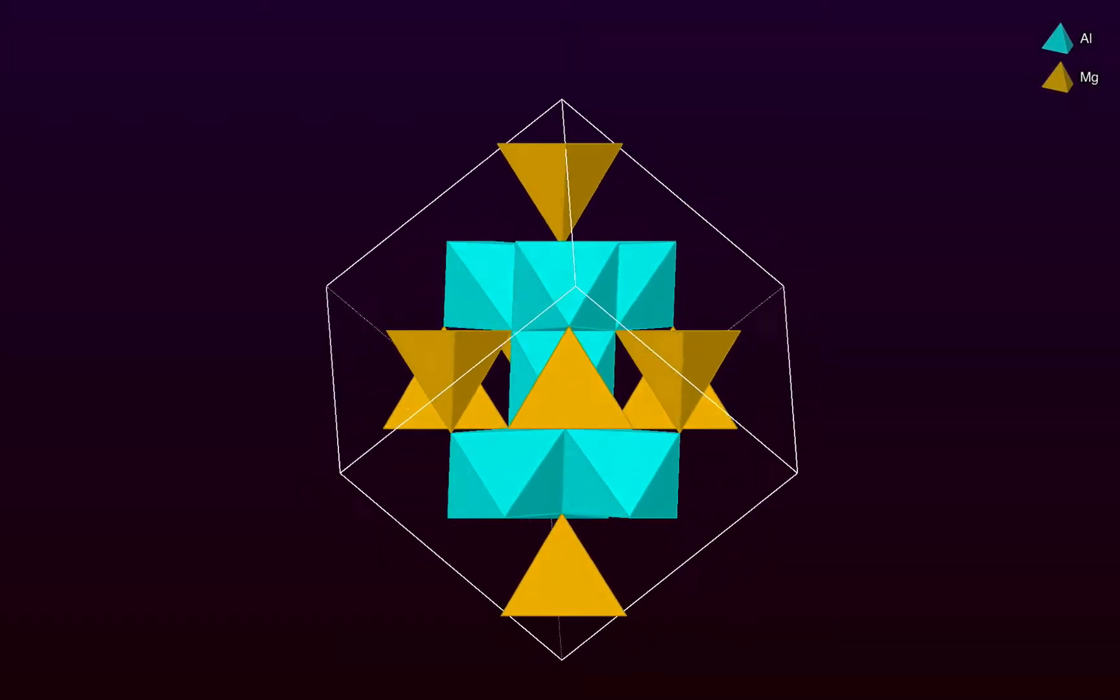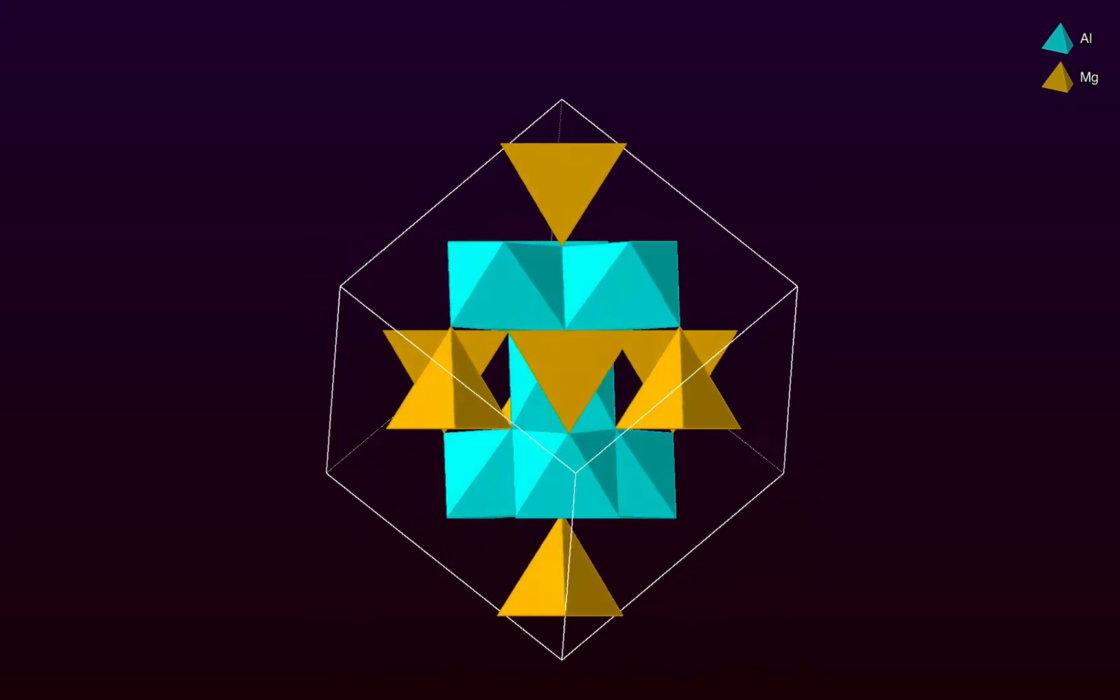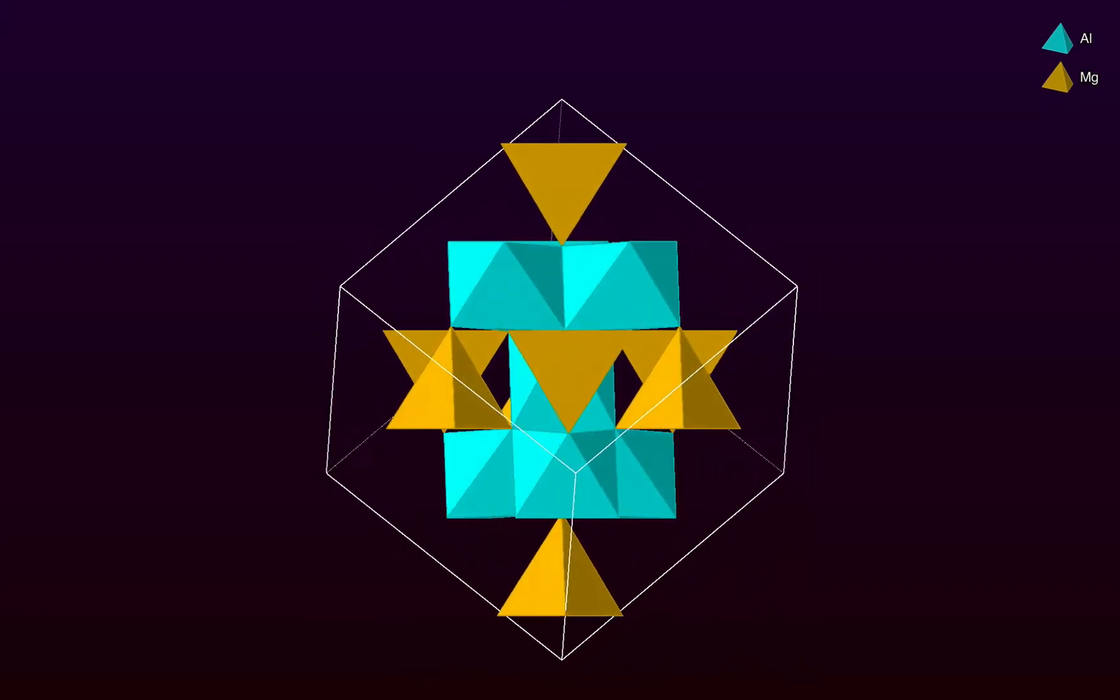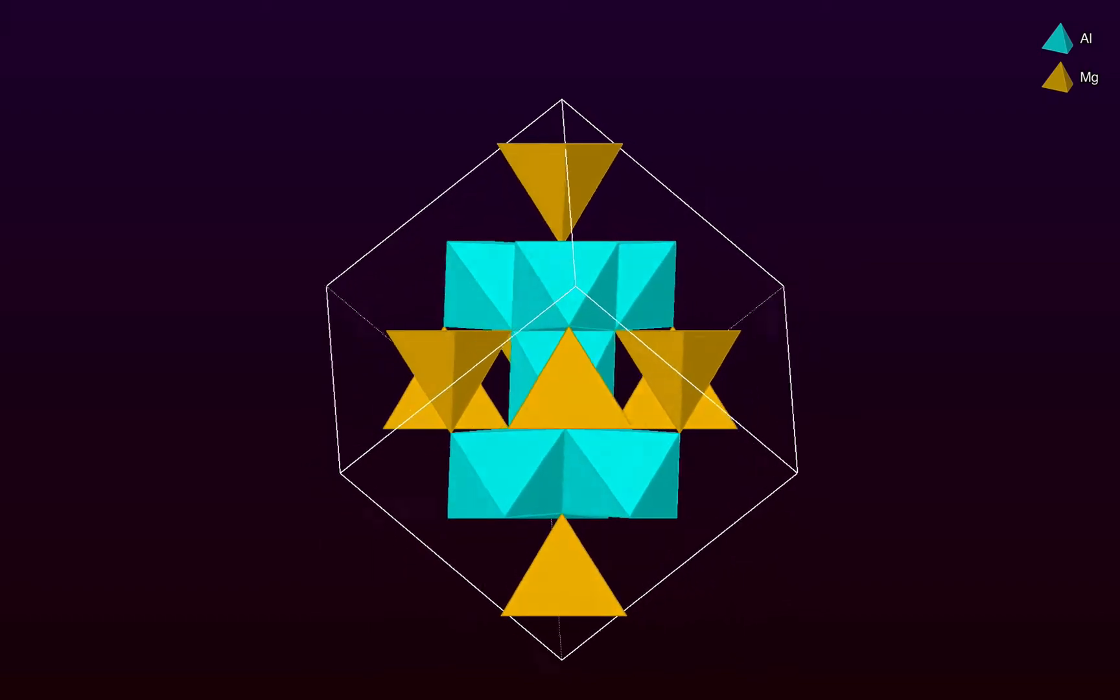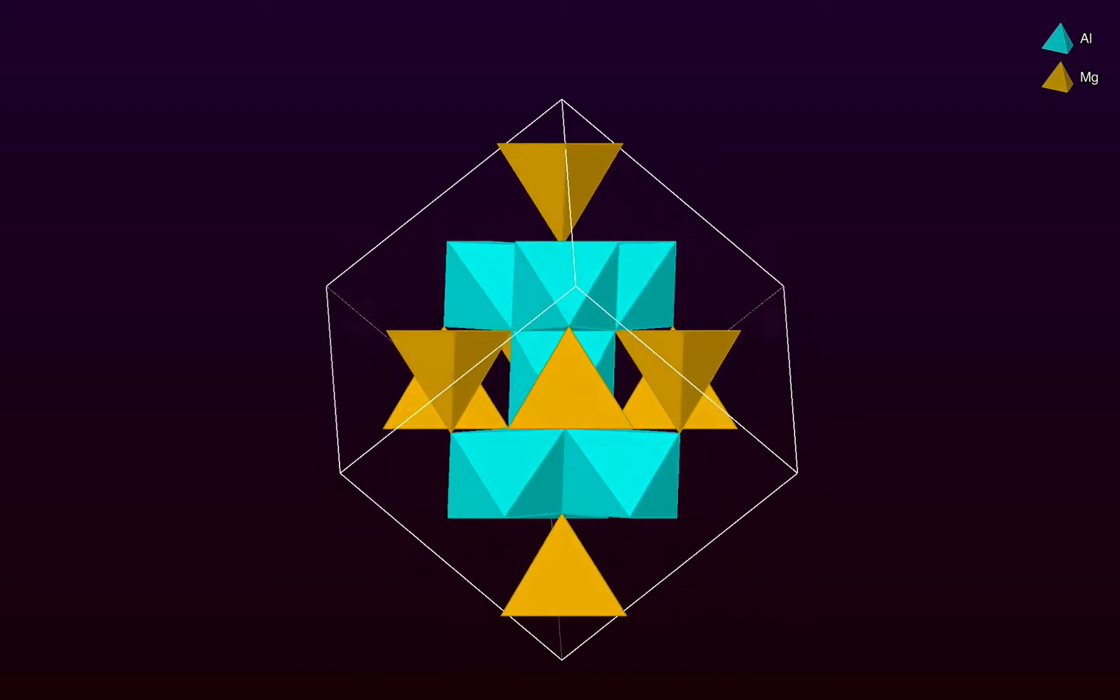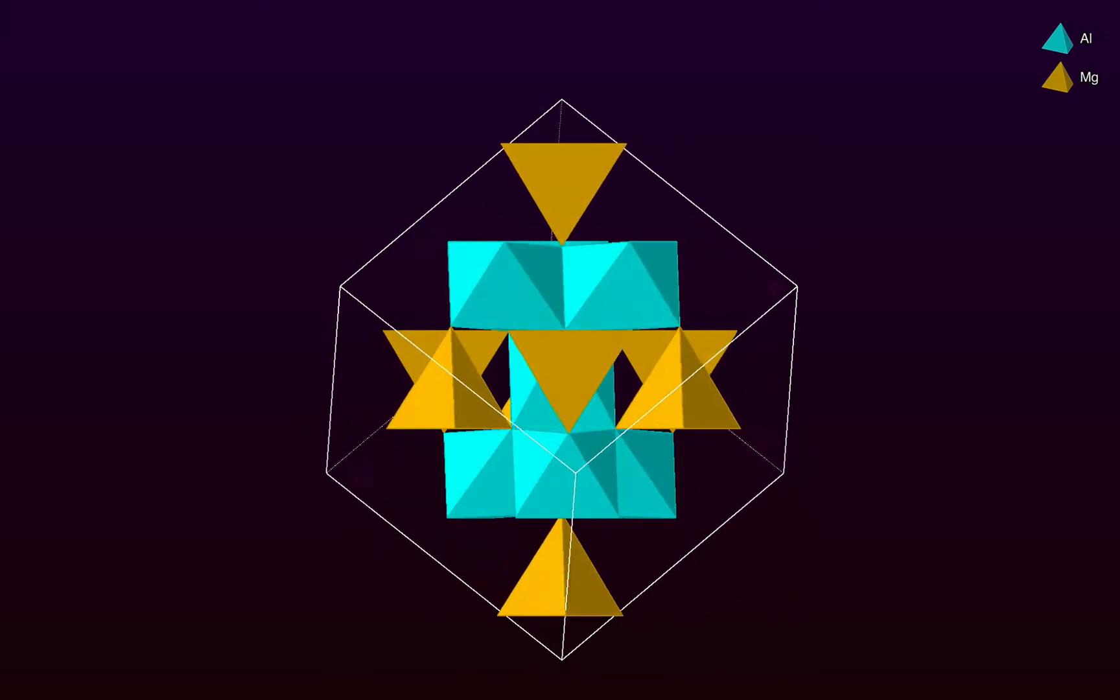Welcome to CrystalMaker 10. In this tutorial we're going to have a look at the selection tools available in CrystalMaker and use those to investigate the coordination environments around aluminium and magnesium atoms in the crystal structure of spinel.